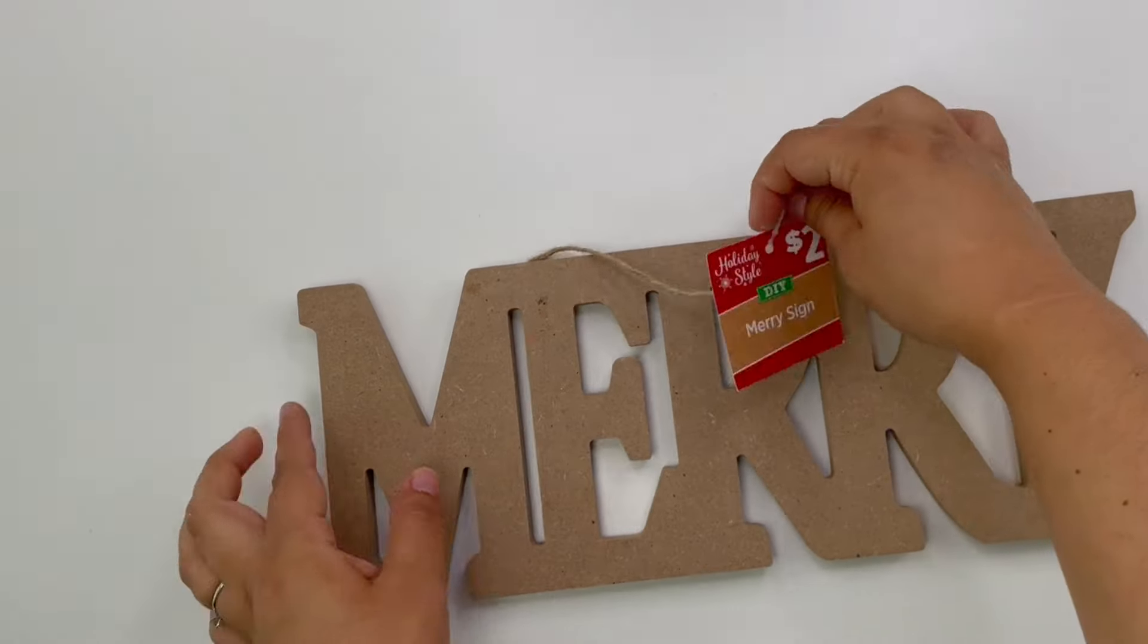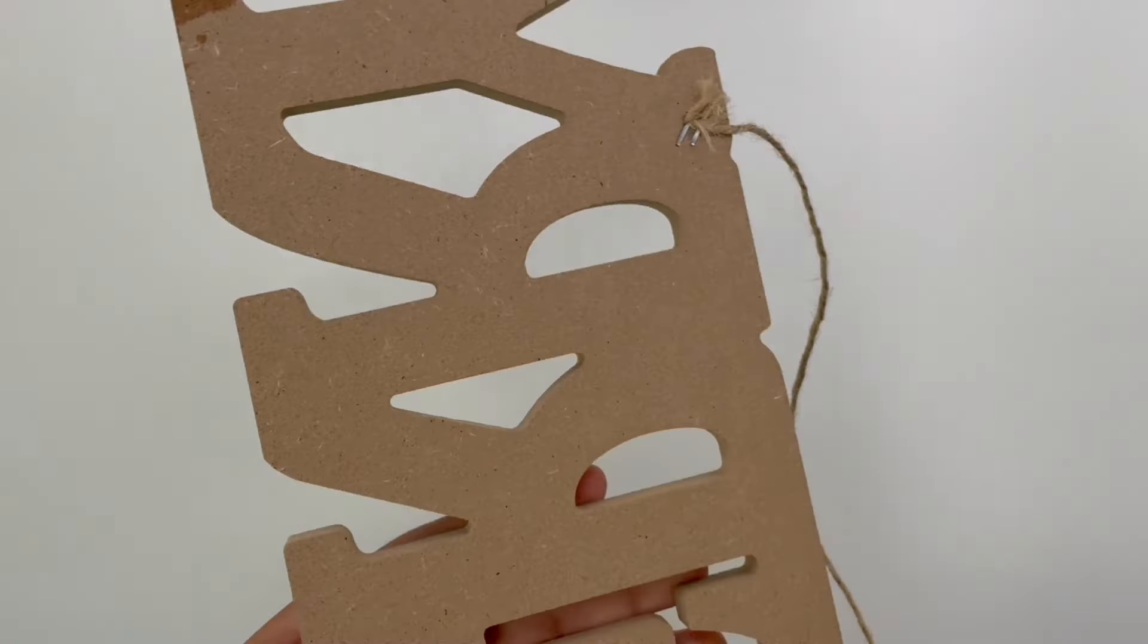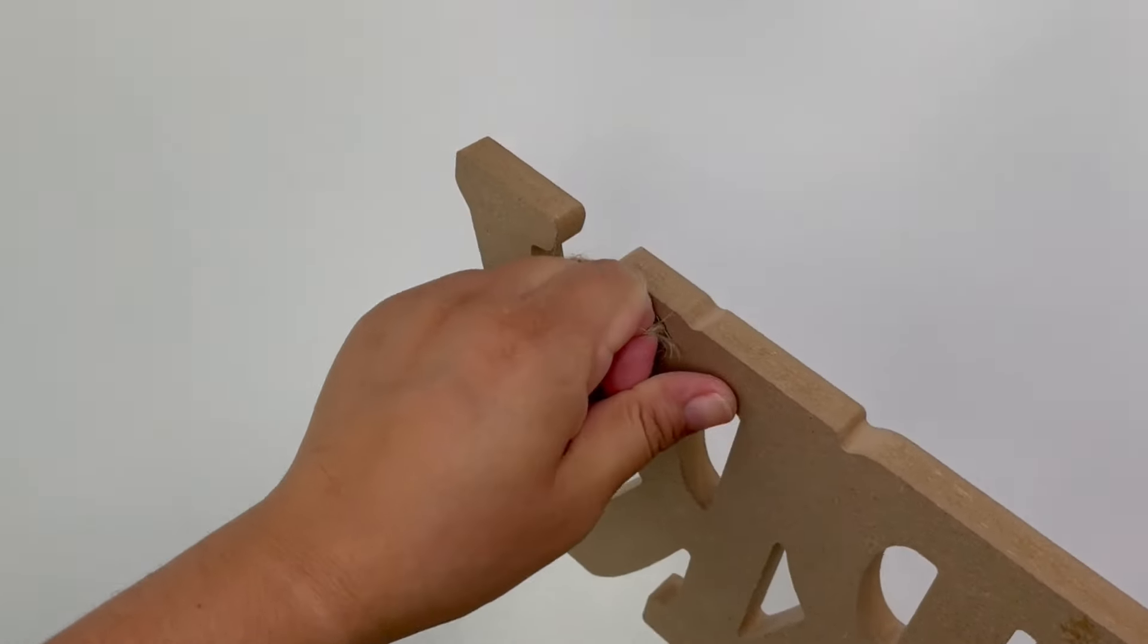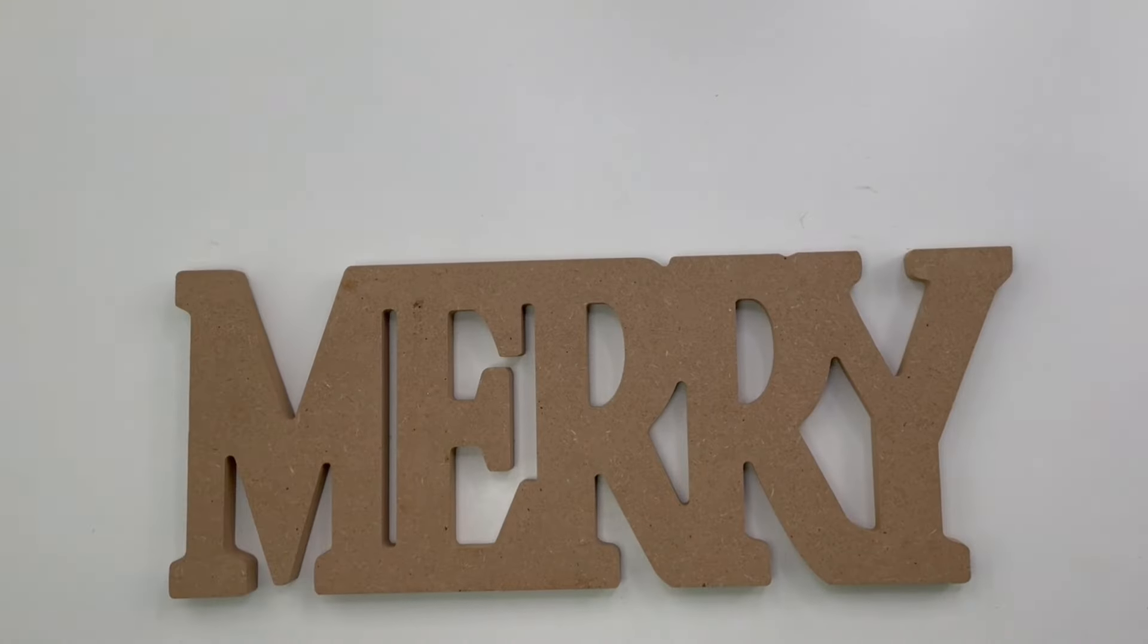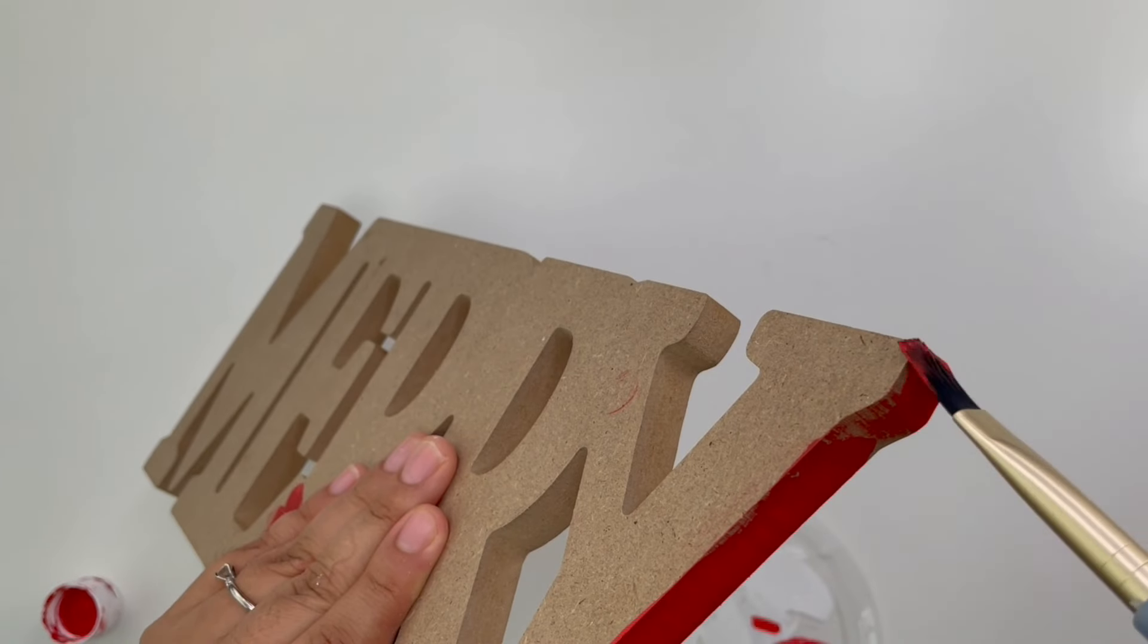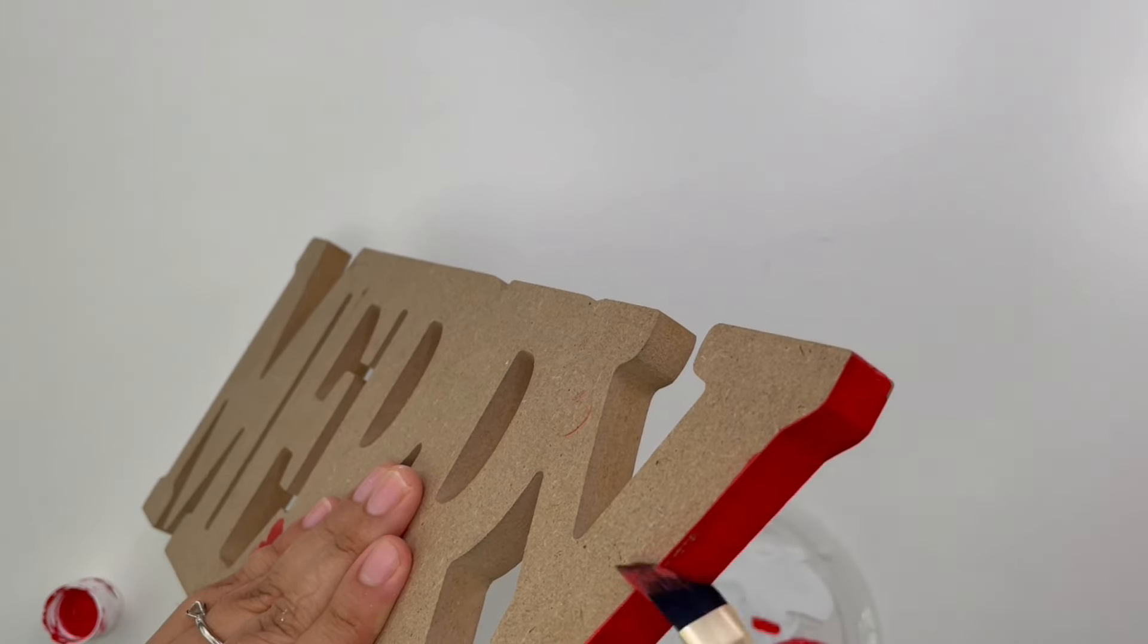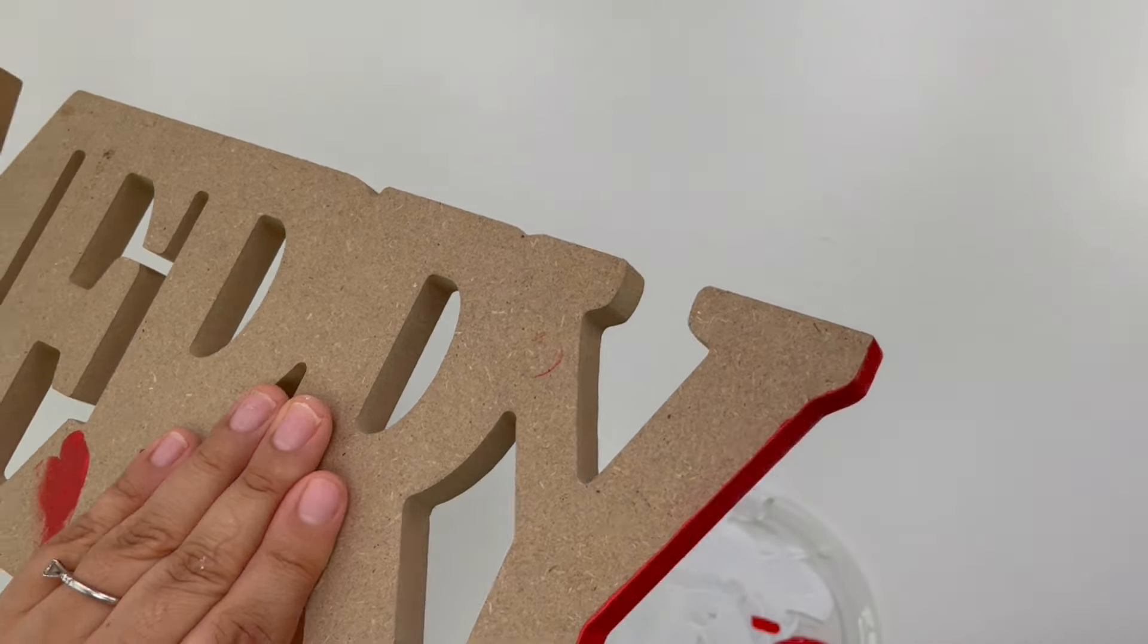For my next project I will be using this Merry sign. Now this is from Dollar General. This is actually bigger than the ones that Dollar Tree carries but Dollar Tree does carry similar ones to this. First thing I'm going to do is I'm going to paint all the edges using this Apple Barrel acrylic paint in the color Red Flag. I wasn't very careful so some of the back ended up painted, so what I did so it didn't look too messy I just painted the back too.